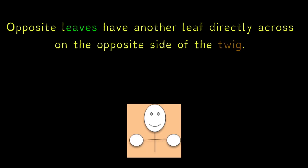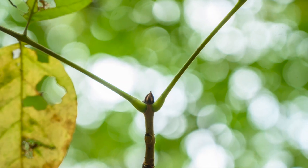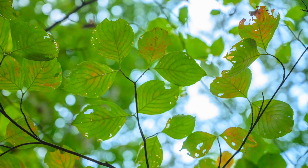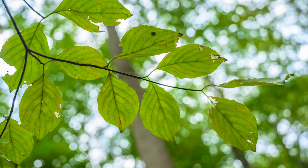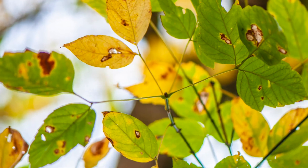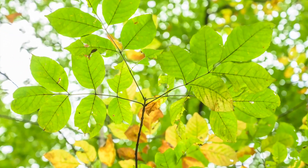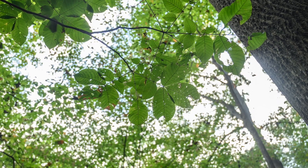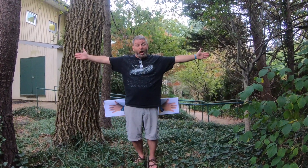My hands are on opposite sides of my body. My other hands are also on opposite sides of my body, directly across from each other. Opposite leaves have another leaf directly across on the opposite side of the twig. Opposite means directly across from each other.